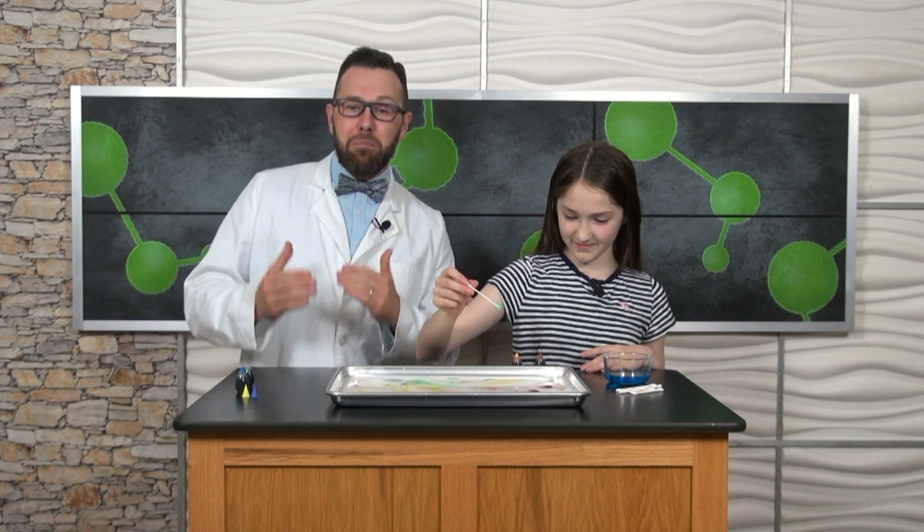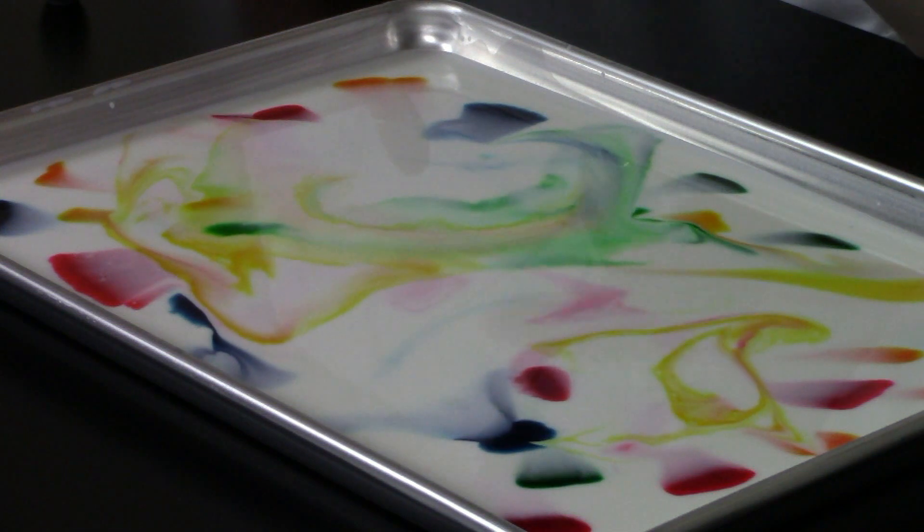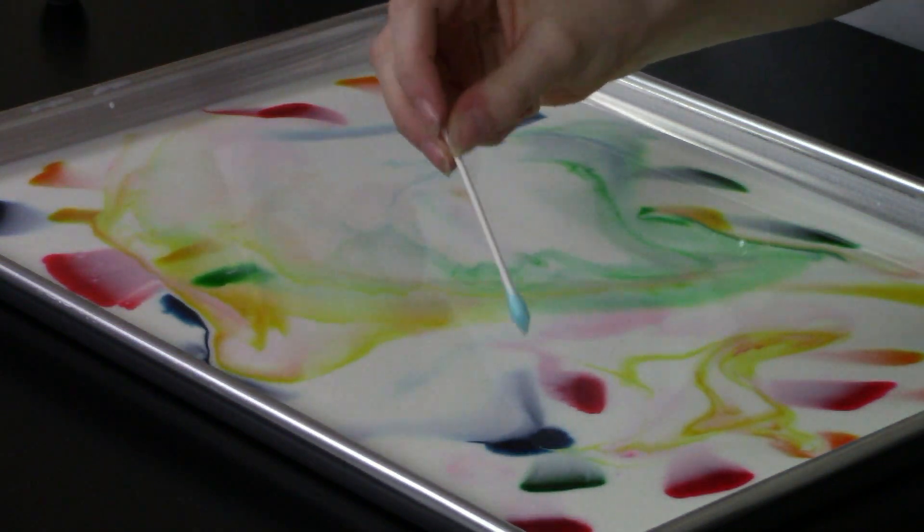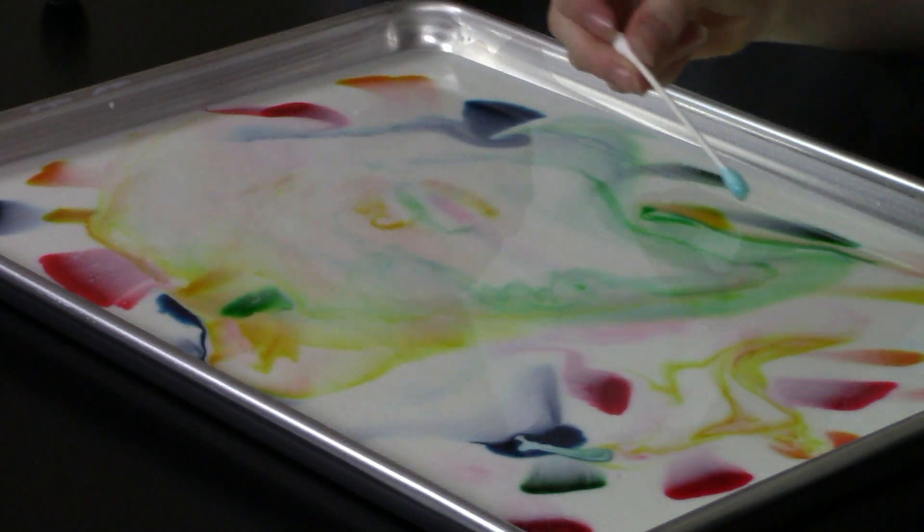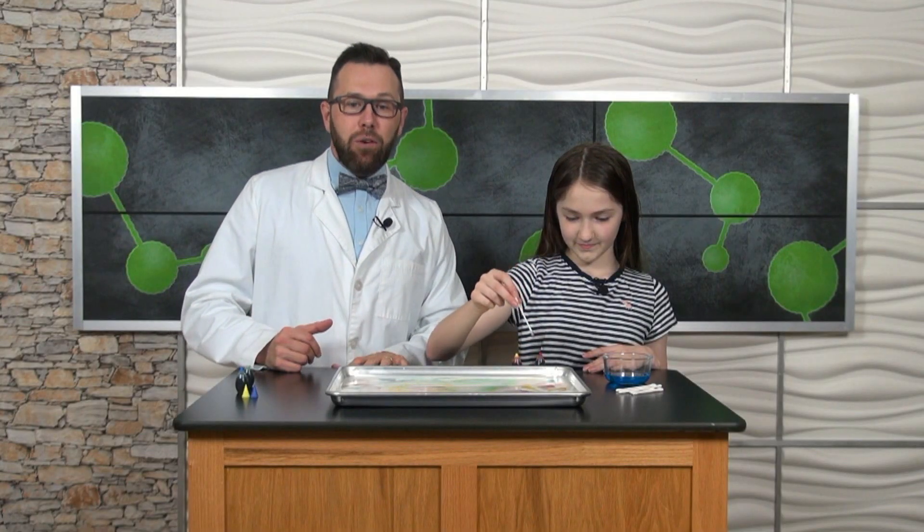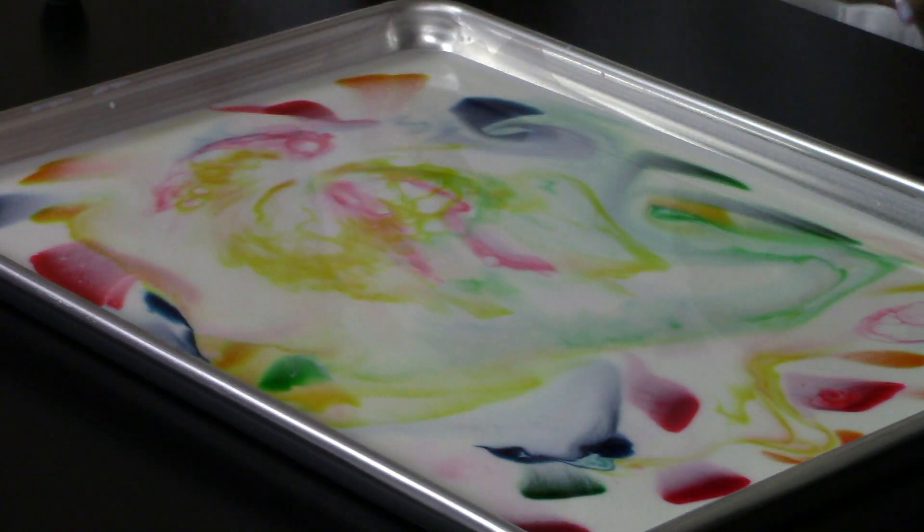Here's what's going on. The milk contains water, proteins, and fats. The milk surface has surface tension. Here's what the dish soap does. It interacts with the fat in the milk and reduces the surface tension, creating a milk rainbow.